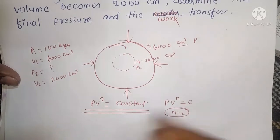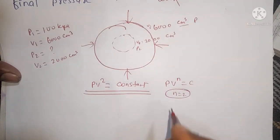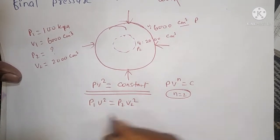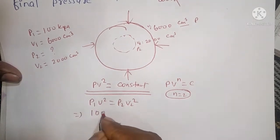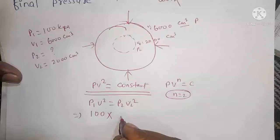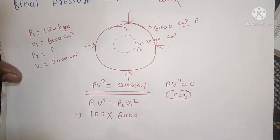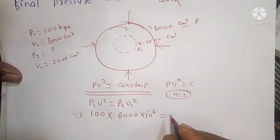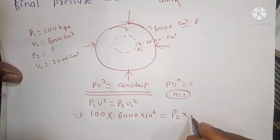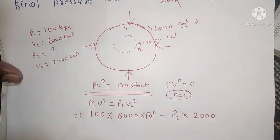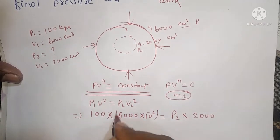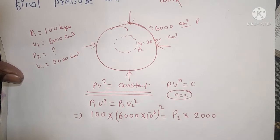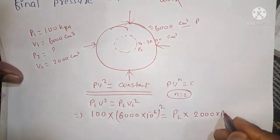First, we find P2. Since P1V1² = P2V2², we have 100 kilopascal times 6000 squared equals P2 times 2000 squared. Converting cubic centimeters to meters using 10^-6 multiplier, we solve for P2.